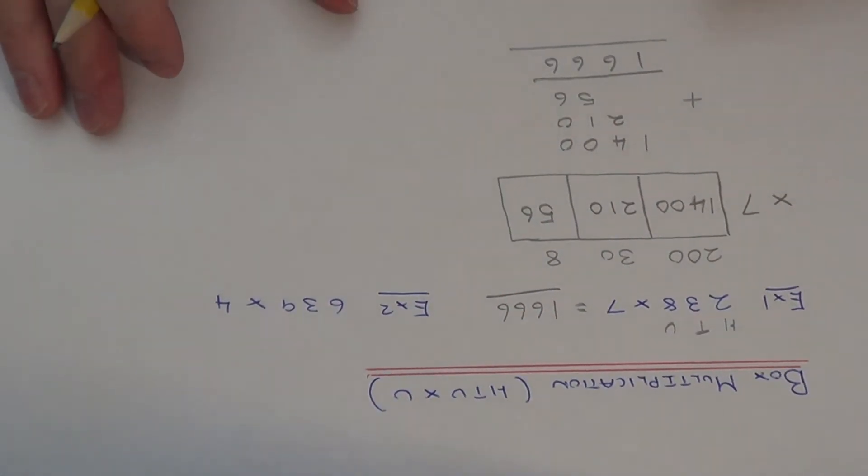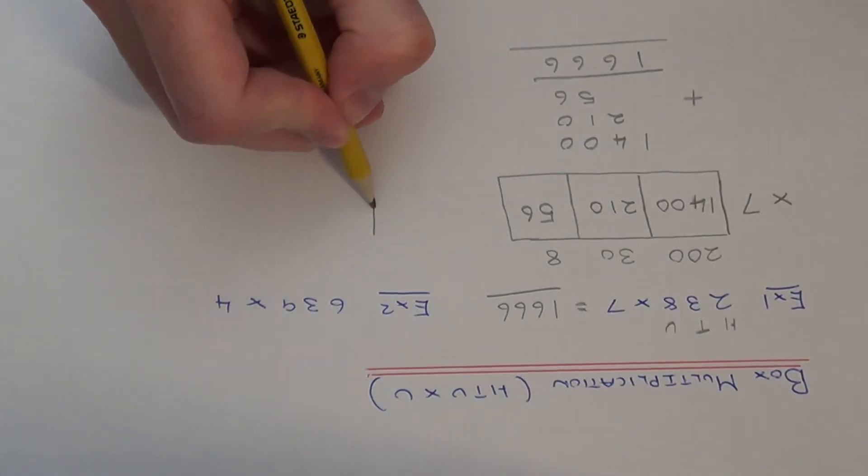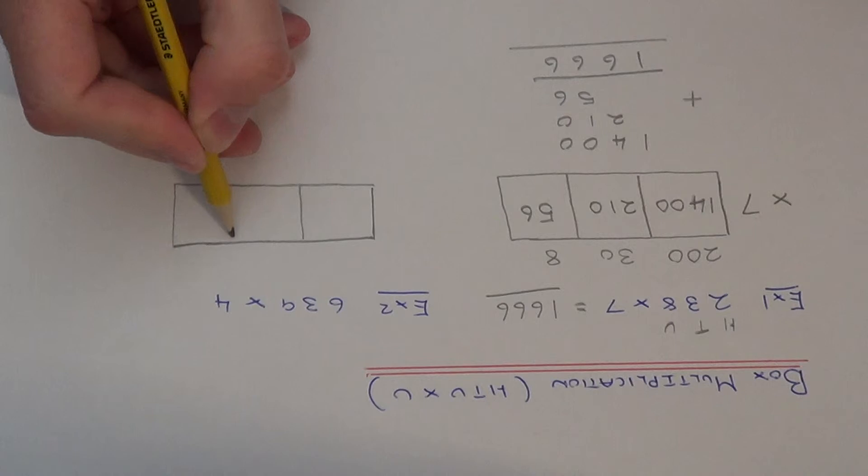So let's look at example two. We've got 639 times 4, so again it's a three digit number so we need a rectangle with three spaces in, three boxes.